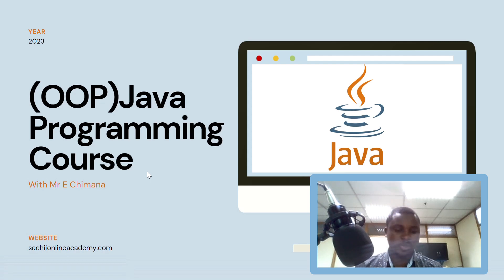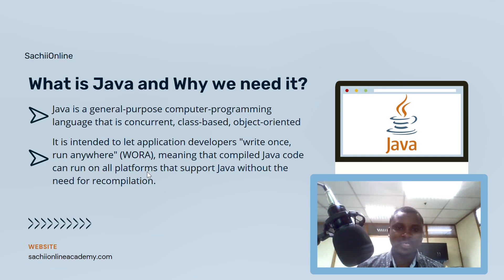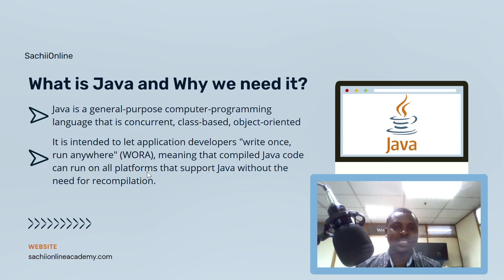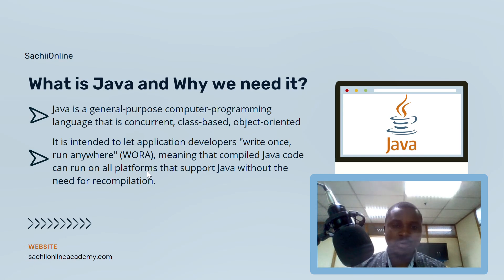Let's start this video. What is Java and why do we need it? Java is a general-purpose computer programming language that is concurrent, class-based, and object-oriented. You might not understand all these terms right now but we'll dive deeper later on. It is a general-purpose language, which means you can apply it for web development, Android application development, or desktop applications. It is also class-based, meaning it uses the concept of classes.